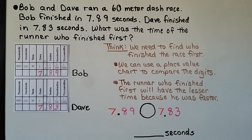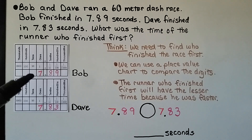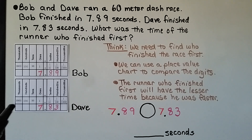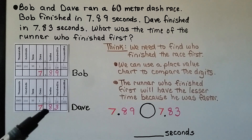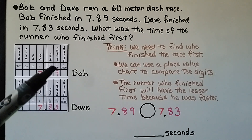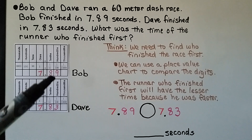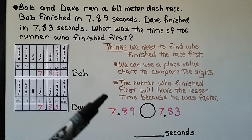Bob and Dave ran a sixty-meter dash. Bob finished in seven and eighty-nine hundredths seconds; Dave finished in seven and eighty-three hundredths seconds. What was the time of the runner who finished first? We use a place value chart. They have the same ones and the same tenths, so we look at their hundredths: Bob has nine hundredths, Dave has three hundredths.